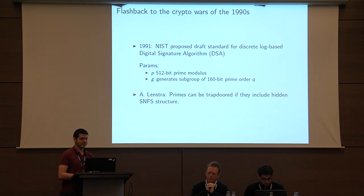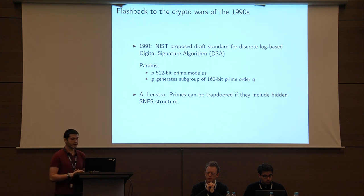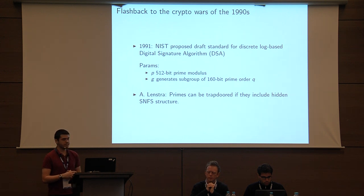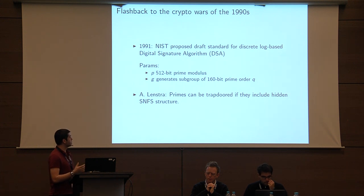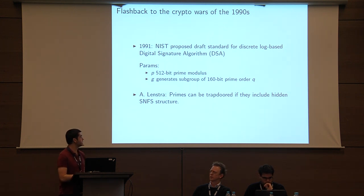Taking a brief trip back to the 1990s: in 1991, NIST was proposing to standardize the Digital Signature Algorithm, one of the first proposed standardized schemes relying on the discrete logarithm problem. They were considering primes of 512-bit size and 160-bit prime order subgroups. It was observed that a trapdoor could theoretically be constructed — a prime amenable to the special number field sieve — but it would be somewhat hidden, not obviously of the form 2^n minus 1 or close to a power of 2.